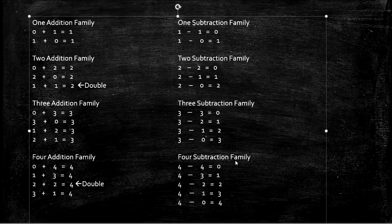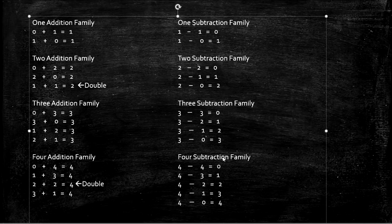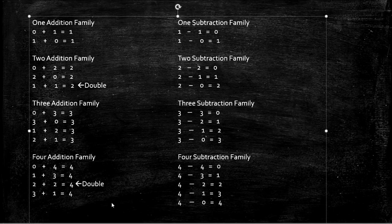4 subtraction family — hopefully you didn't catch that mistake! 4 minus 0 equals 4, 4 minus 3 equals 1, 4 minus 2 equals 2, 4 minus 1 equals 3, 4 minus 0 equals 4. Somebody might have seen that I accidentally put addition there, but I changed it. It's okay to make a mistake — just fix your mistakes, it's no big deal. Keep practicing your addition and subtraction families, and we'll keep adding numbers and keep learning. Keep up the good work!